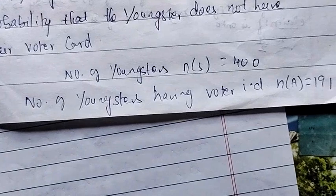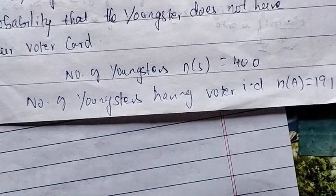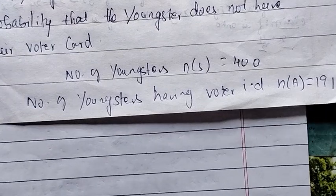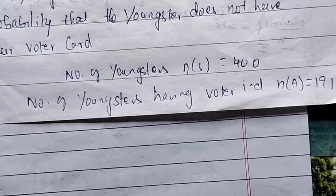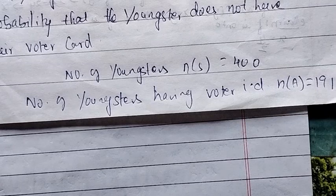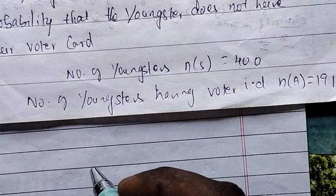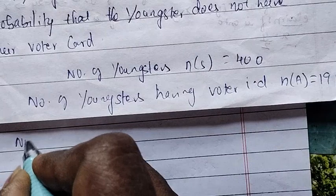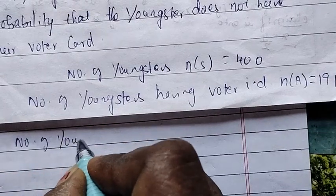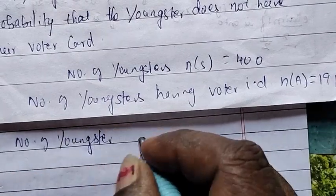So, the number of youngsters who do not have the voter ID code — the question is to find the probability that the youngster does not have the voter ID code. So, we find the number of youngsters who do not have the voter ID code.